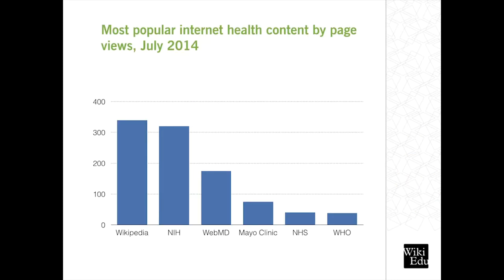I want to show you another way of representing that. This chart uses data from Dr. James Heilman to show the number of page views for health-related content on various websites. As you can see, Wikipedia is the most accessed source for medical information — more people are visiting it every month than the NIH, than WebMD, and so on.